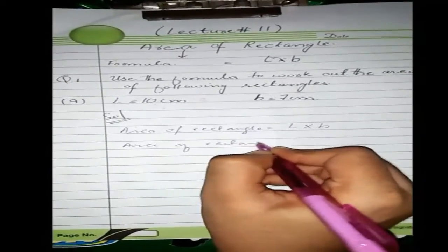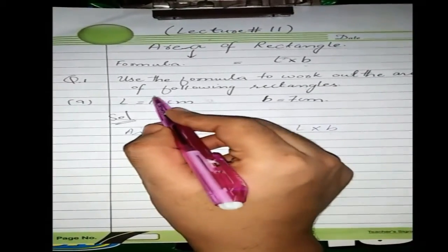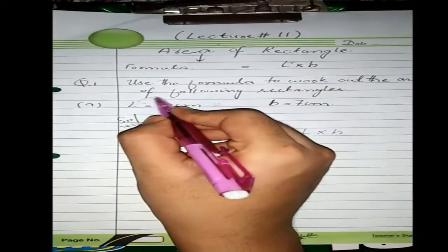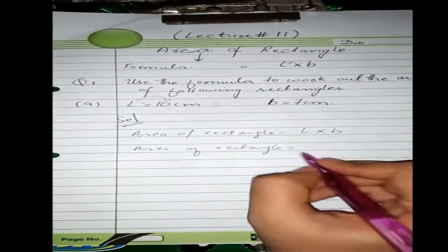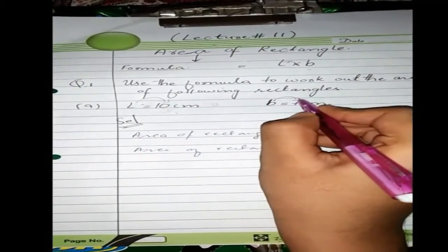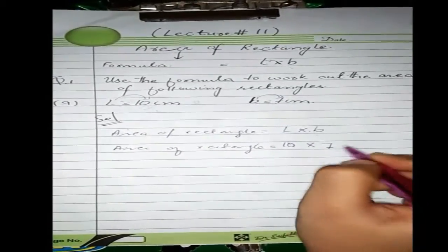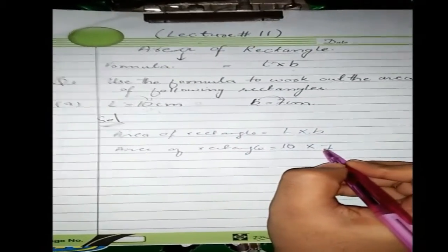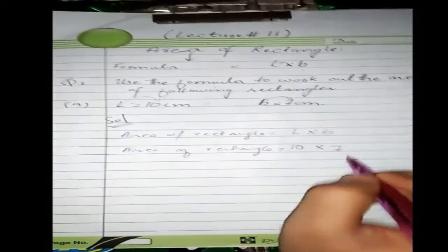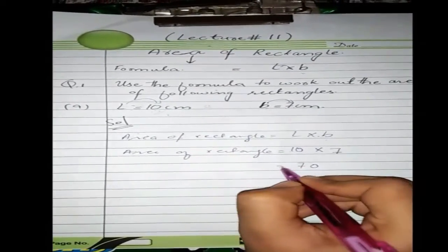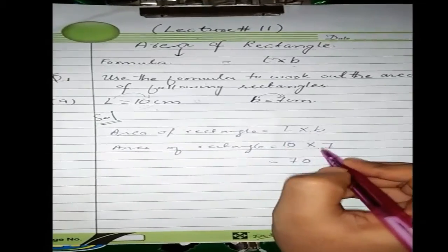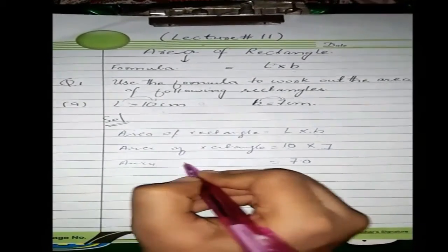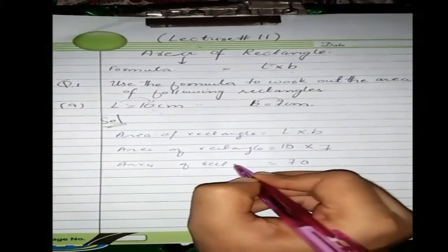Area of rectangle is equal to length 10 cm. We will write the value of length, which is 10, multiplied by breadth. What is the breadth? Breadth is equal to 7. We will multiply: 10 multiplied by 7. Ten sevens are 70. So the area of rectangle is 70.